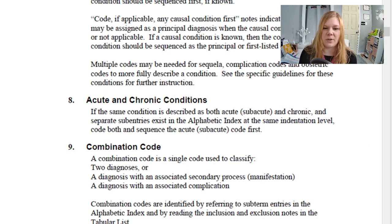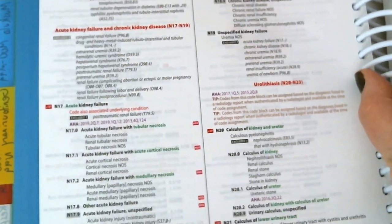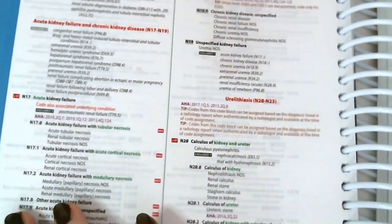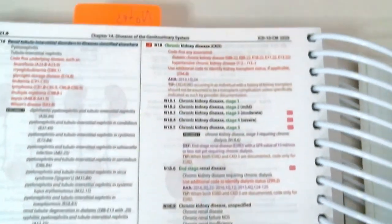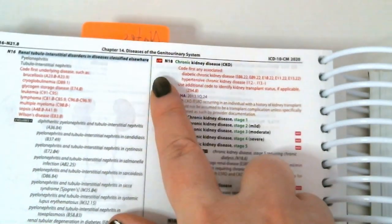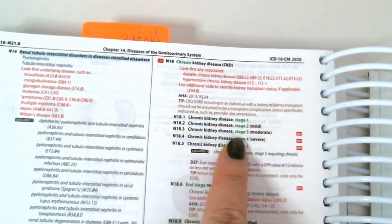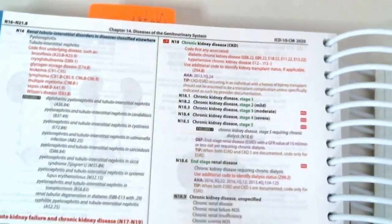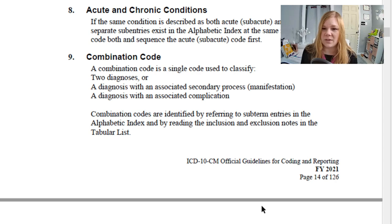For example, with kidney disease — if a patient has both acute kidney failure and chronic kidney disease at the same time, you code N17 for the acute first, and then N18 with whatever stage for the chronic kidney disease. A combination code is when we use a single code to classify two diagnoses, or a diagnosis with a secondary process, or a diagnosis with an associated complication.